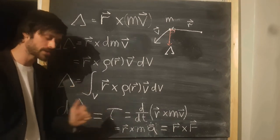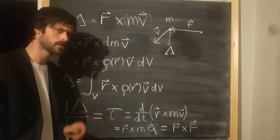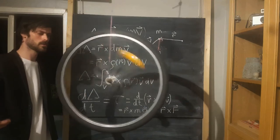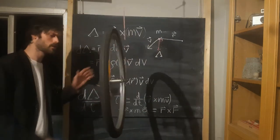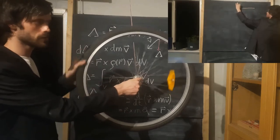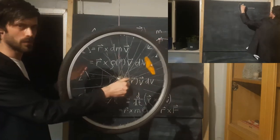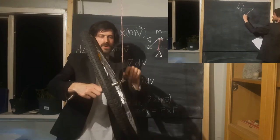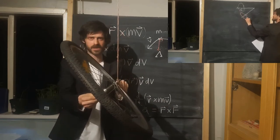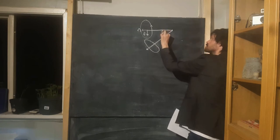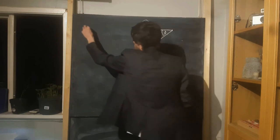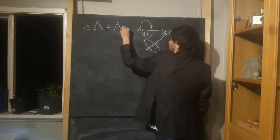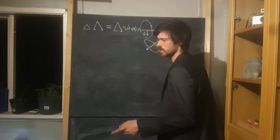Now we finally have the tools needed to understand the curious phenomenon known as precession. Initially, the wheel had some angular momentum. Upon release, the force of gravity induces a torque around the pivot, causing the wheel to deflect from its initial axis by the angle theta. So the change in angular momentum is just the angular momentum times the sine of theta.